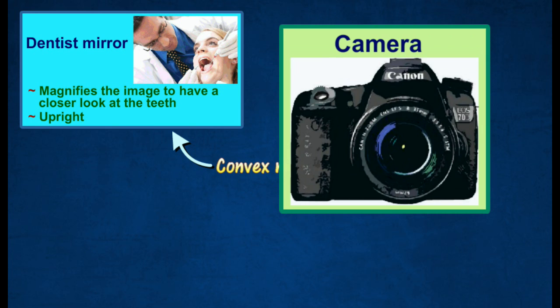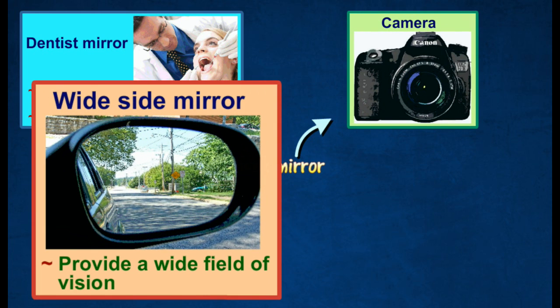Convex mirrors are also applied in cameras. Convex mirrors are attached to plane mirrors because they have a wider field of vision than plane mirrors.